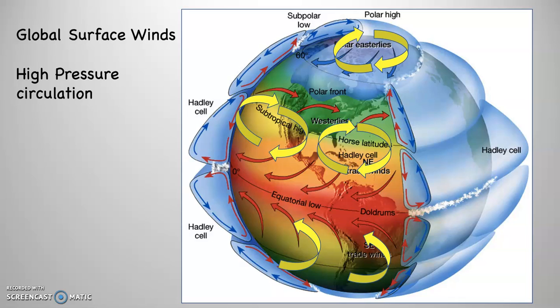Up at the very far northern part of this diagram, you can see that as the air circulates around the polar high, that circulation creates the polar easterlies.